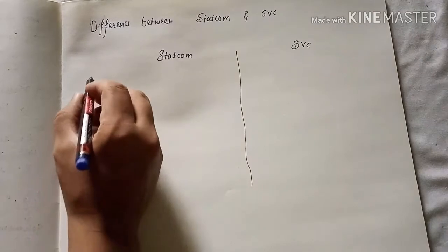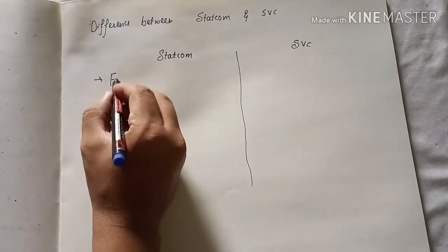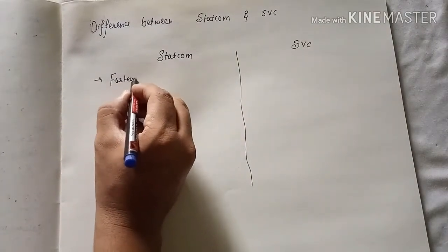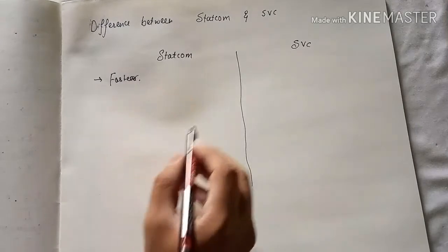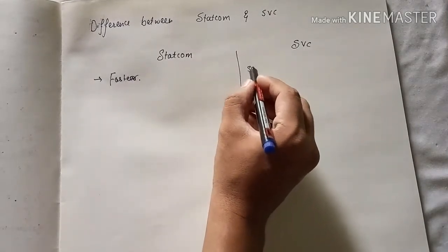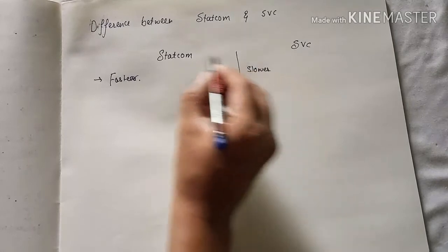The STATCOM is faster than SVC. In SVC we can say it is slower than STATCOM.